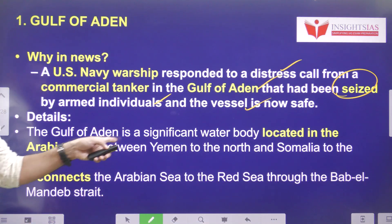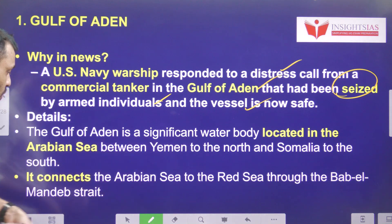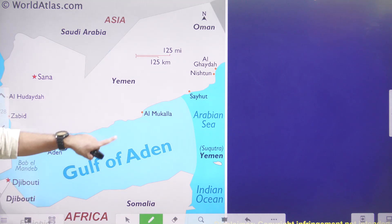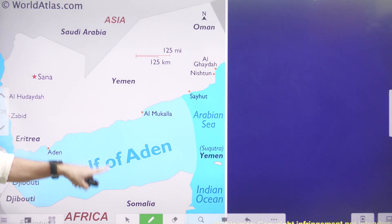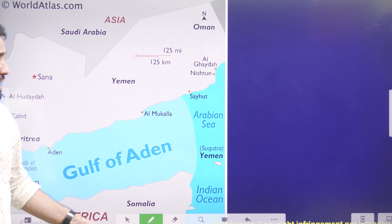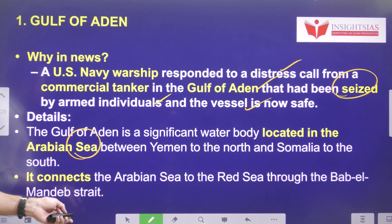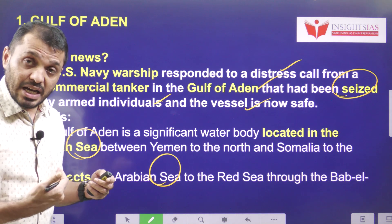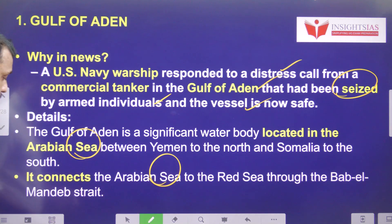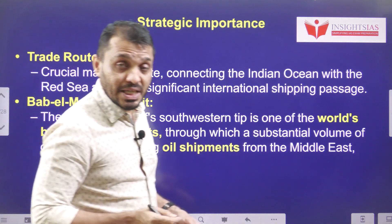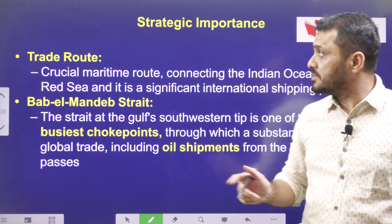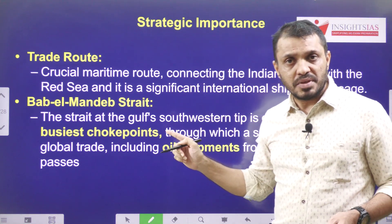The Gulf of Aden is a water body located in the Arabian Sea, with Yemen in the north and Africa — that is Somalia — in the south. It acts as a link between the Arabian Sea and the Red Sea, connecting to the Red Sea through the Bab-el-Mandeb strait, which is a narrow water body connecting two larger water bodies.